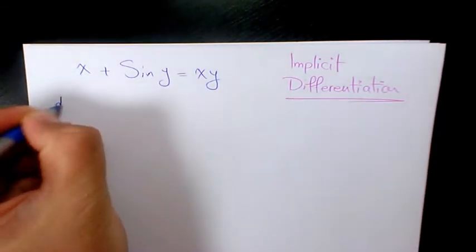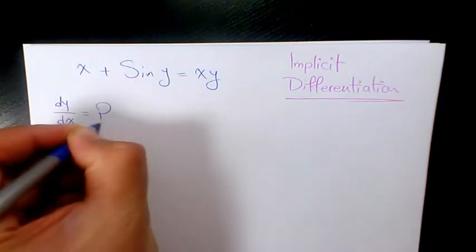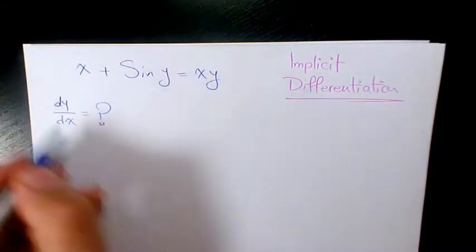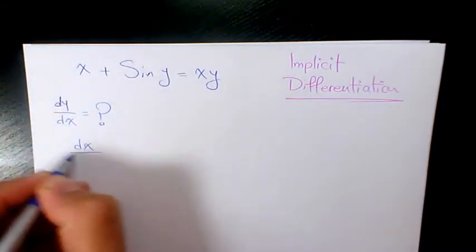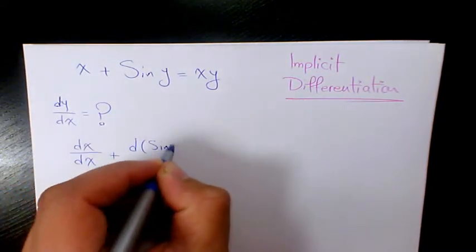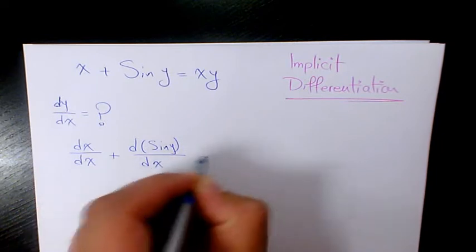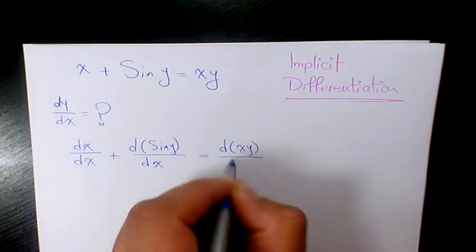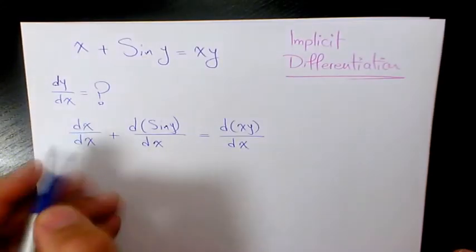To find dy/dx, we start by taking the derivative of both sides: dx/dx plus the derivative of sine y with respect to x equals the derivative of xy with respect to x.